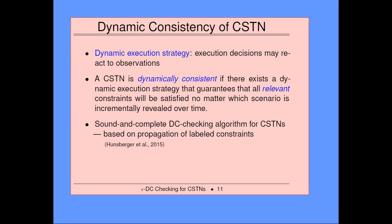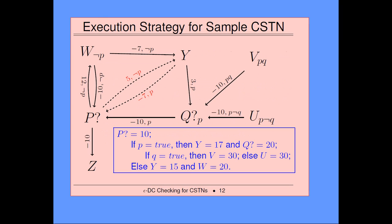A dynamic execution strategy: the execution decisions can react to observations after some delay. It's called dynamically consistent if there exists a strategy that guarantees all applicable constraints will be satisfied no matter which scenario is incrementally revealed over time as you make more and more observations. Last year we presented a sound and complete propagation-based algorithm. Here's an example of an earliest first execution strategy for this network.